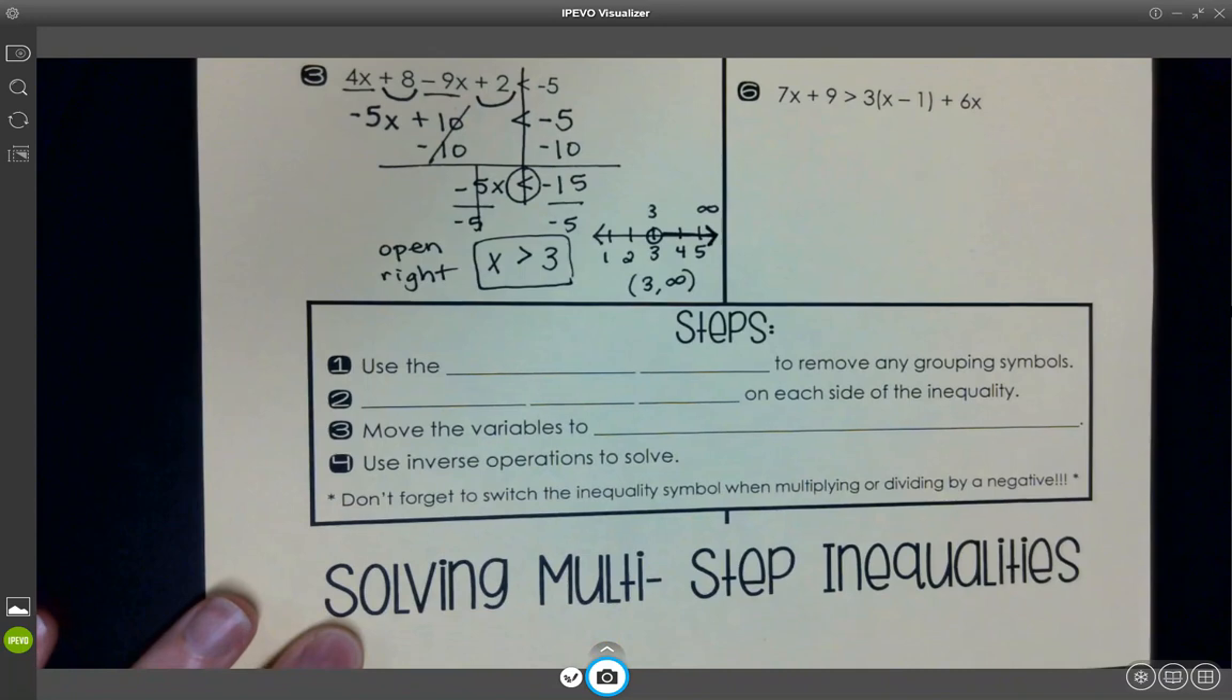Let's review the steps real quick before we go to the other three problems. The steps to solve multi-step equations. Step 1, use the blank to remove any grouping symbols. What do we do to remove grouping symbols? Distributive property right. Combine like terms on each side of the inequality.